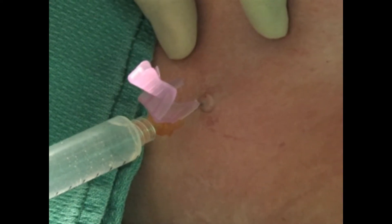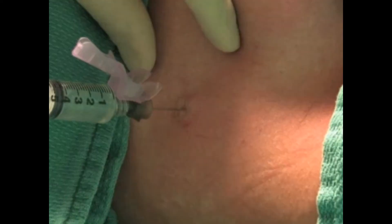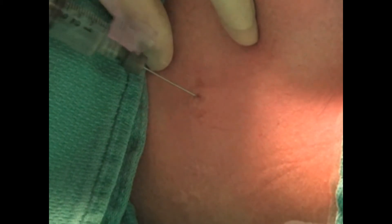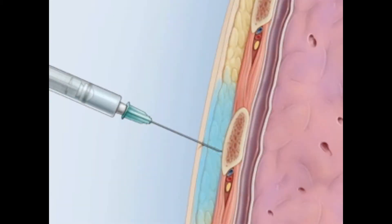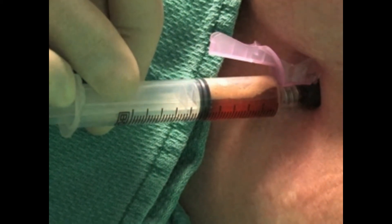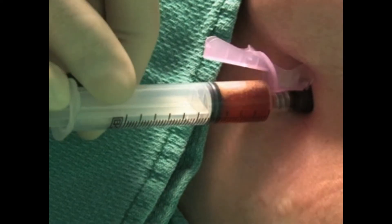Using the smallest gauge needle, create a wheal of anesthetic in the skin overlying the landmark spot. Using the larger needle, anesthetize the subcutaneous skin layers through the wheal, aspirating as the needle moves deeper. Anesthetize the periosteum of the rib that lies below the intercostal space where the tube will be inserted. Once the parietal pleura is encountered, a flash of pleural fluid will fill the syringe if a pleural collection is being evacuated. If a pneumothorax is being drained, the syringe may only fill with air. Withdraw the needle, aspirating along the entire path.